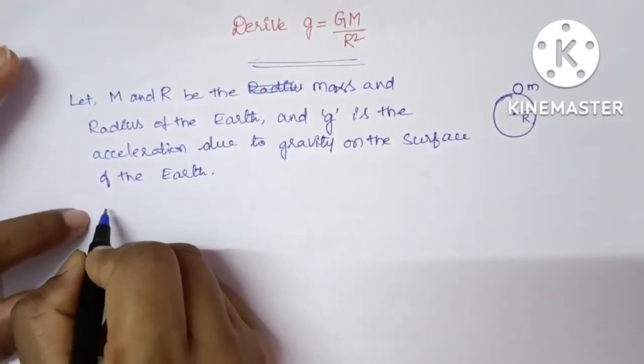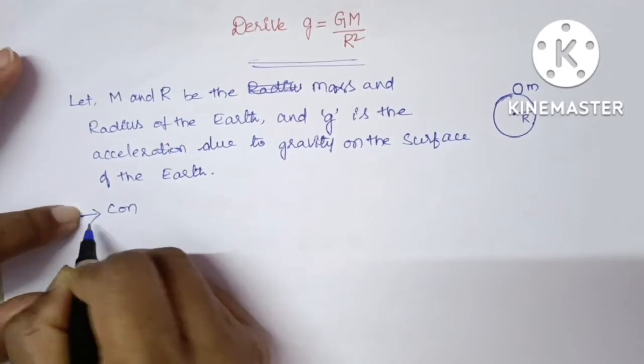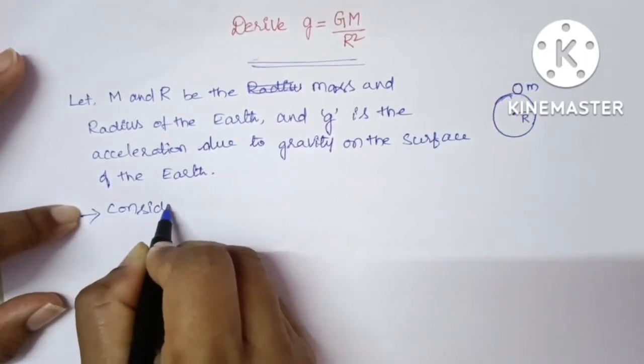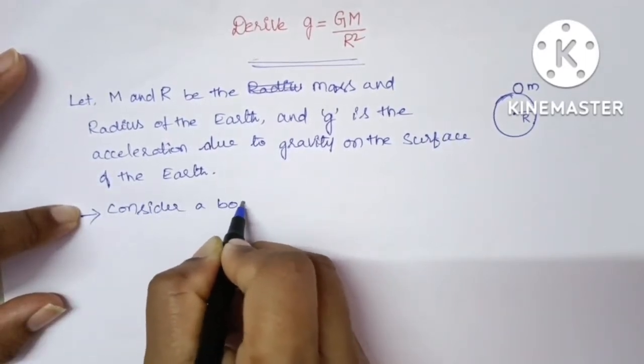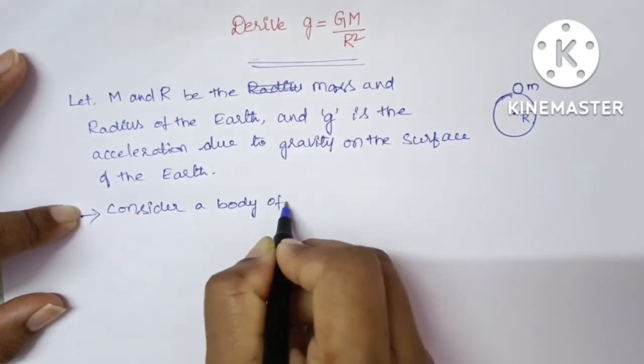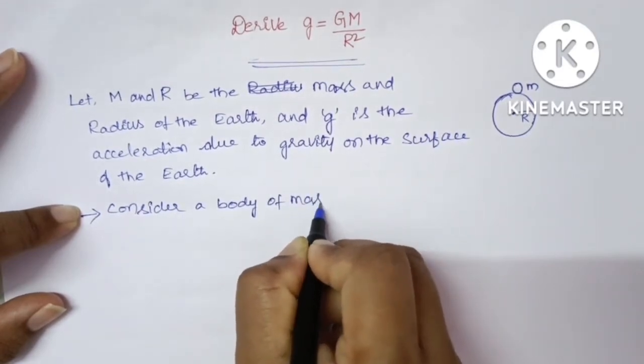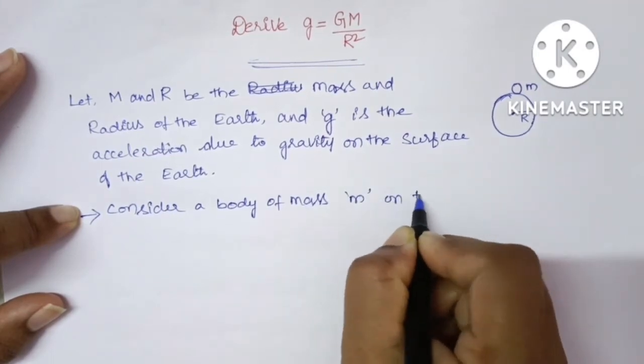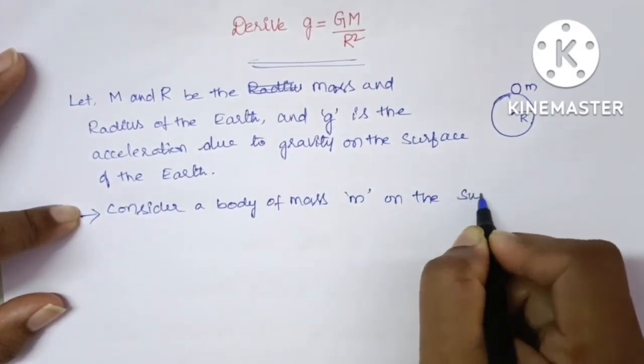And also consider a body of mass small m on the surface of the Earth.